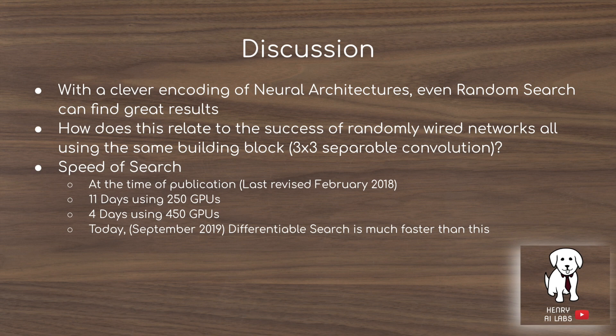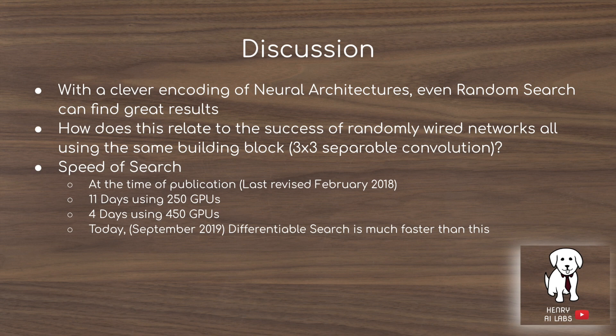This technique shows that clever encodings of neural architectures can lead even random search to find good results, suggesting representation may matter more than the search algorithm itself. It's also interesting how this relates to the success of randomly wired neural networks, where the same operation — a 3x3 separable convolution — is used for every connection. Using such a shortcut with operations could allow representing many more architectures with the hierarchical encoding. At the time of publication (February 2018), other architecture searches took 11 days using 250 GPUs or four days using 450 GPUs, highlighting the importance of speeding up neural architecture search for small labs.